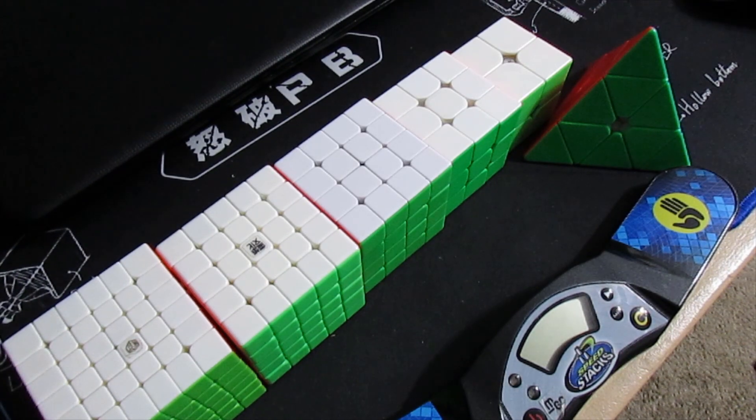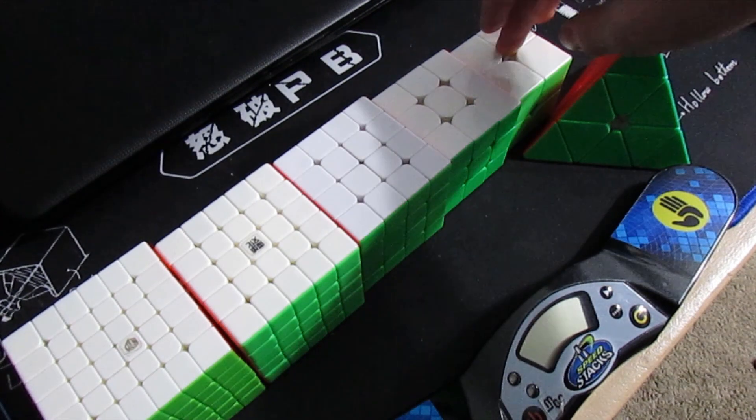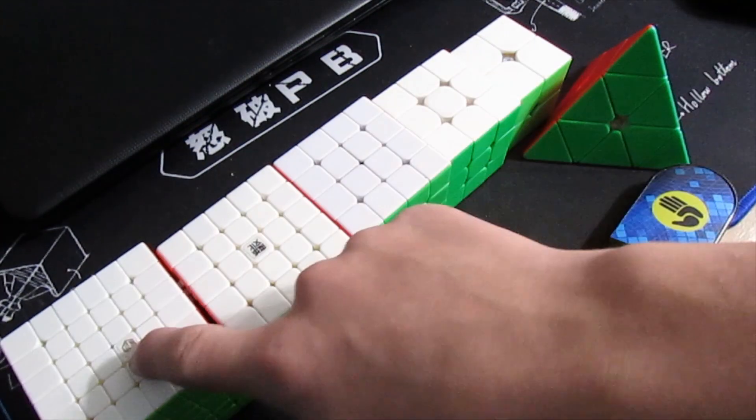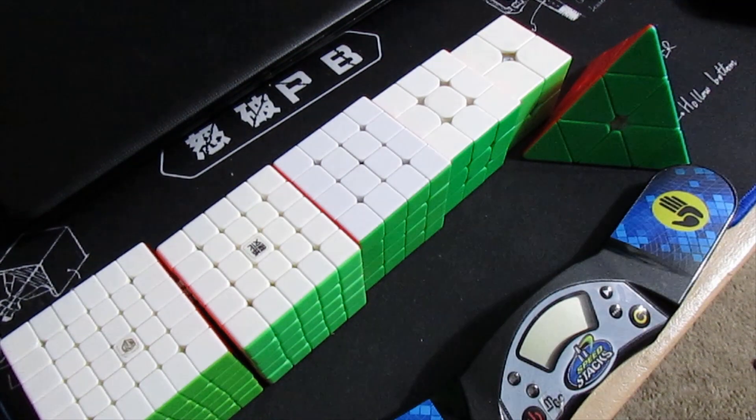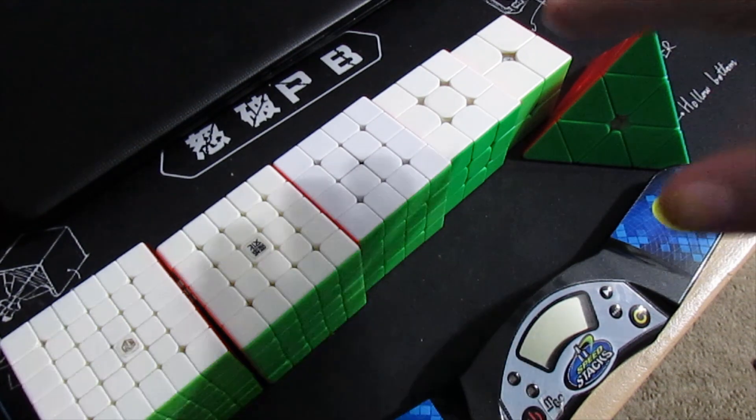Hello everyone, welcome to my mains and goals for the Woodbury competition this Sunday. At this competition they have 2x2, 3x3, 4x4, 5x5, 6x6, and Pyraminx. Obviously I'm competing in all of them.